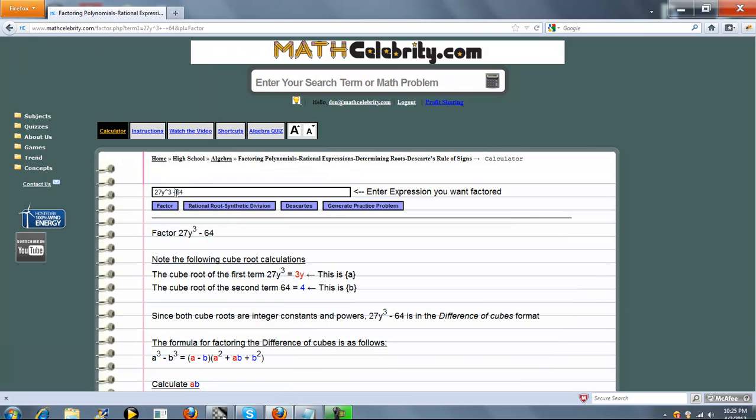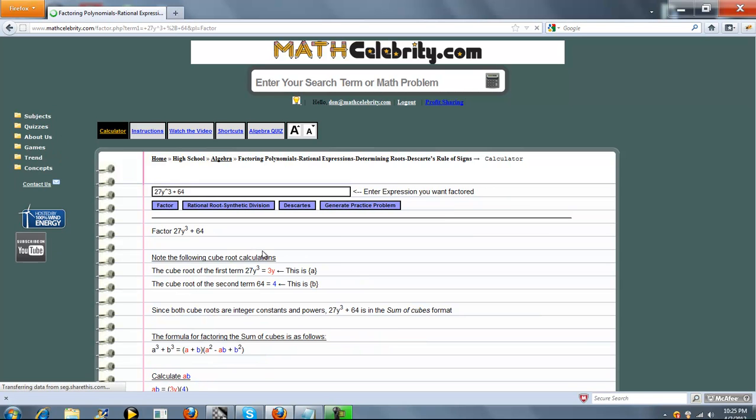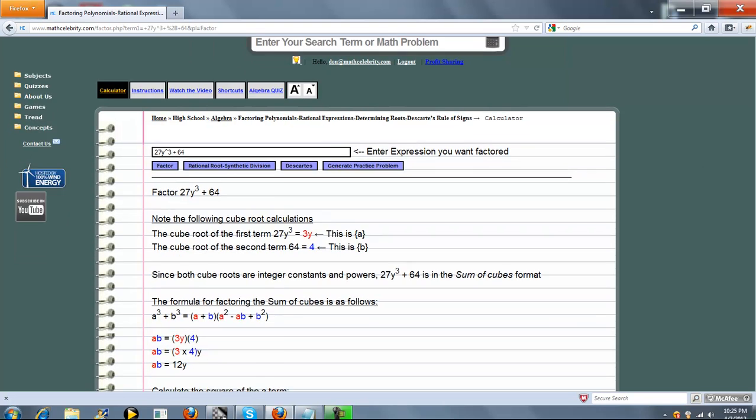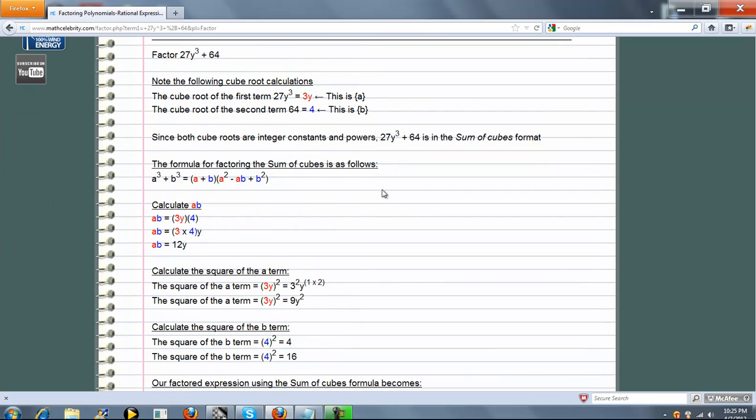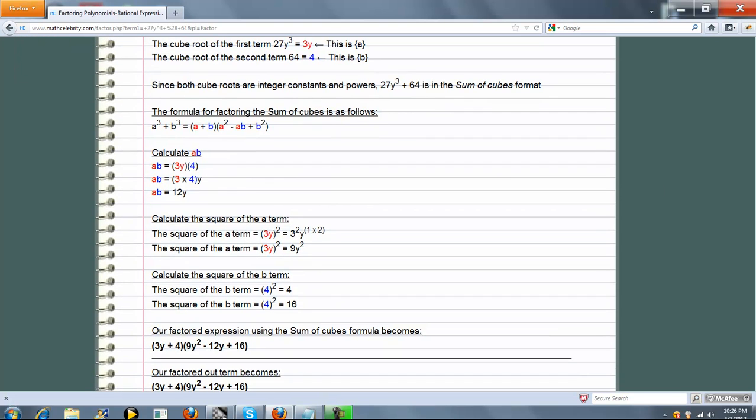Now what about a sum of cubes? Go ahead and press factor. The sum of cubes formula is similar—there's just a couple sign changes. Again, the cube root of 27y cubed is 3y, cube root of 64 is 4. Here's the sum of cubes formula. Pretty simple—we just have a sign change or two. We calculate our a, b, our a squared and our b squared, and here's our answer.